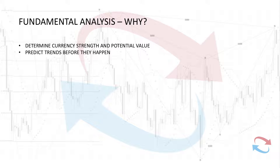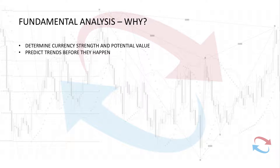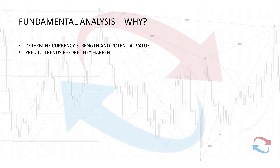Another reason to use fundamental analysis is to predict trends before they happen. You can predict what the market state is going to be like. There are really only two market states: trending or ranging. In my opinion, markets are in a constant ranging state and trend within a large range. If you understand currency strength and value, you can potentially predict trends before they happen. Ultimately, we're trading one currency against another, and we're looking for divergences in certain fundamental indicators.